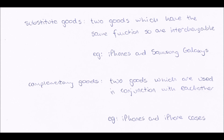So the demand for iPhone cases will go down. If the price of iPhones goes up, people stop buying them, and therefore people stop buying iPhone cases too. So the demand for iPhone cases goes down. This is all from a negative cross elasticity of demand number.